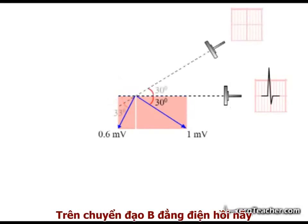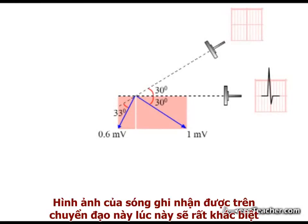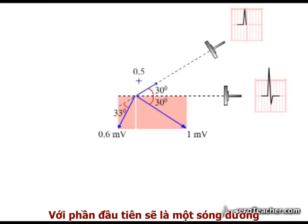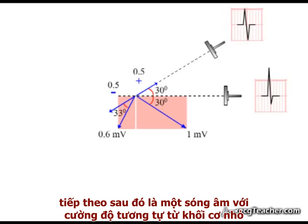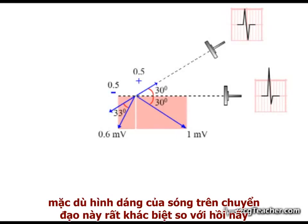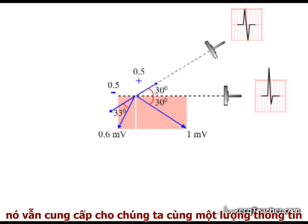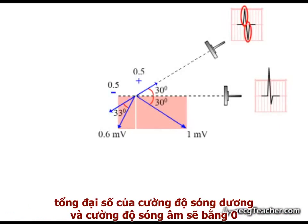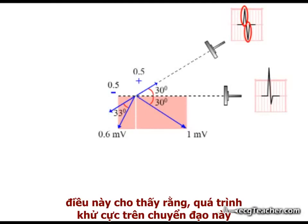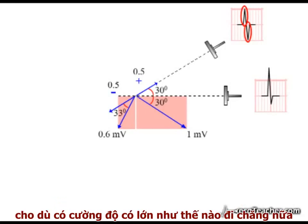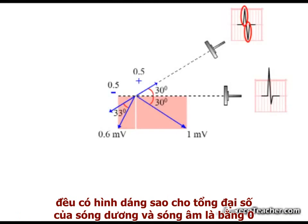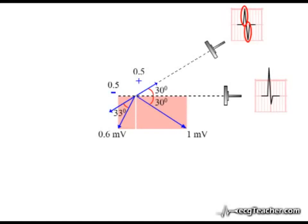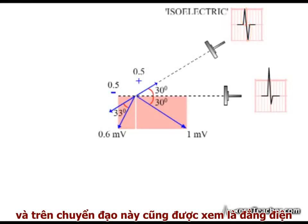In the lead said to be isoelectric in the first situation we analyzed, the morphology of the model readout is now very different — with an initial positive deflection of 5 small squares generated from the larger section, followed by a negative deflection of the same magnitude. Although the morphology of the readout in this lead is very different from the first situation, it is still giving us exactly the same information. The fact that the positive and negative deflections add up to zero indicates that the depolarization events, whatever their magnitude, are flowing in a pattern such that their total vectorial sum is zero. The readout in this lead is still said to be isoelectric.